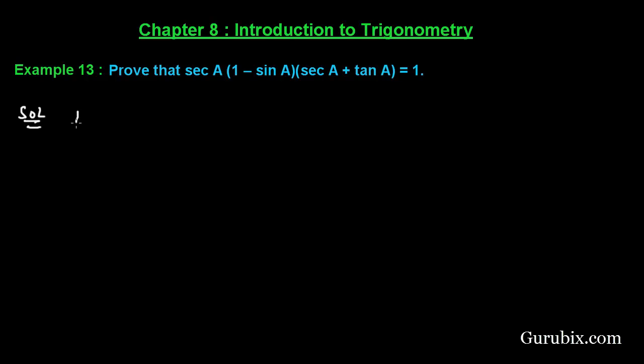Let us collect the left hand side of the identity, that is sec A(1 - sin A)(sec A + tan A). The rule is that we change sec A and tan A in terms of sine or cos.